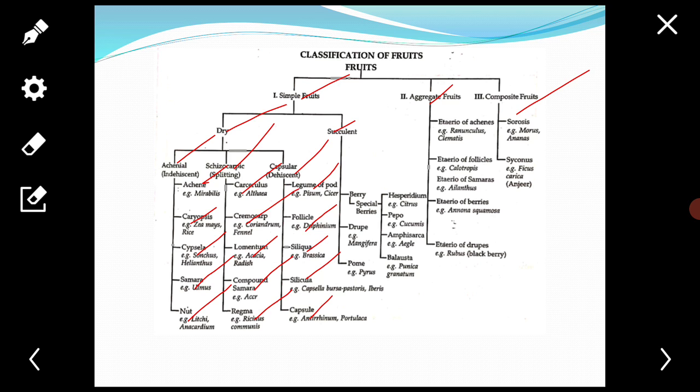Next, the second simple fruits: that is succulent or fleshy fruits. These are simple fruits in which pericarp or its associated parts become fleshy or succulent. The fleshy pericarp becomes distinct into three layers: the outermost epicarp, middle mesocarp, inner endocarp. Usually these are indehiscent fruits and are of three types.